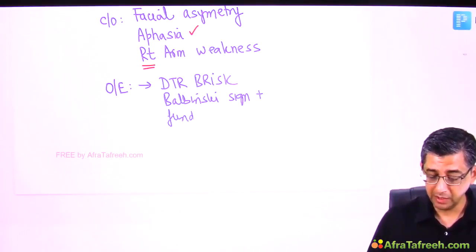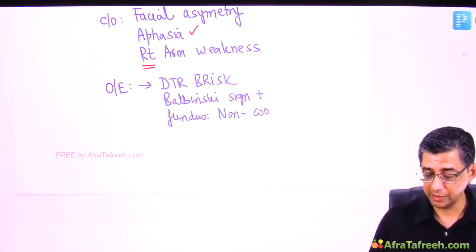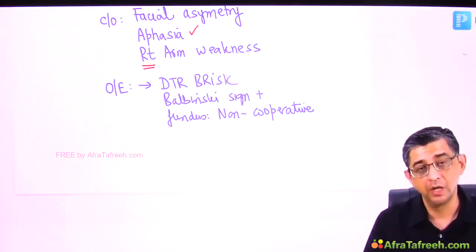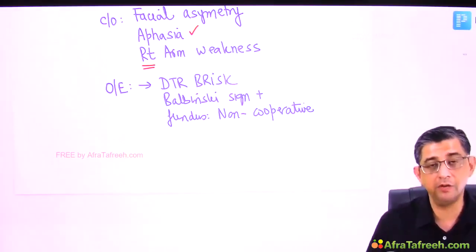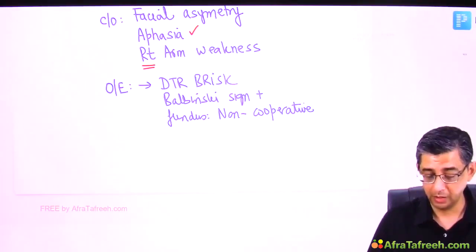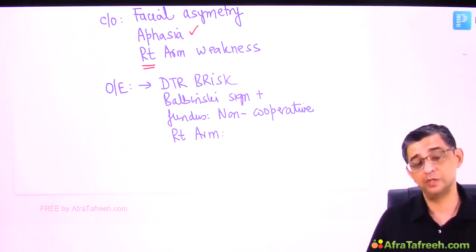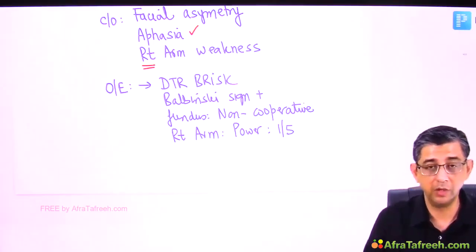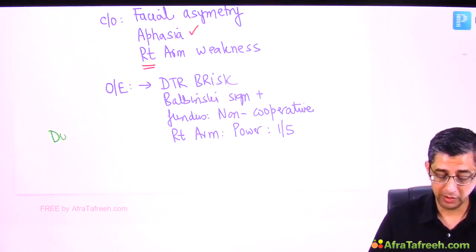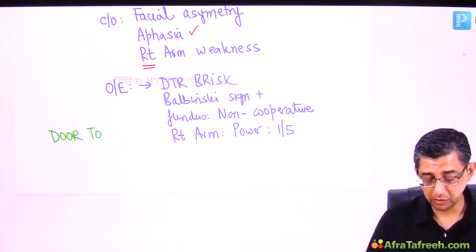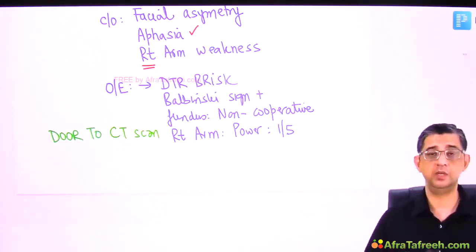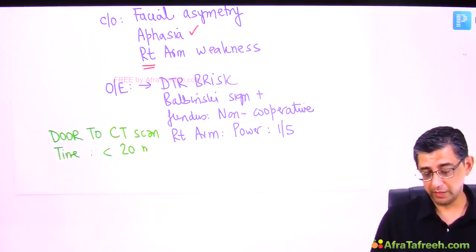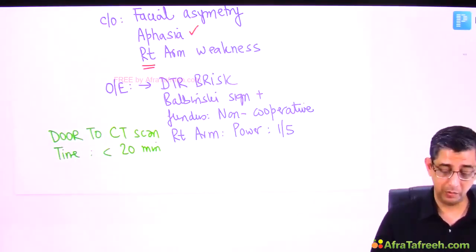Fundus examination was attempted but the patient was non-cooperative. Papilledema could be present. Power disparity was found: left arm power at the shoulder was only 1/5, while the right side was normal. An urgent non-contrast CT head was ordered. Per American Stroke Association guidelines, door-to-CT scan time should be within 20 minutes, and door-to-CT interpretation time within 45 minutes — even on holidays or weekends.